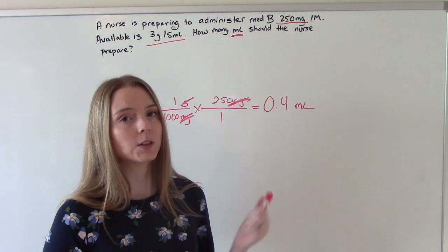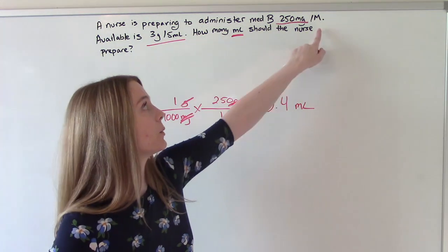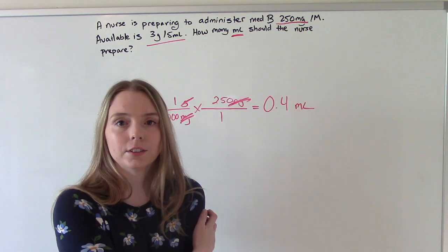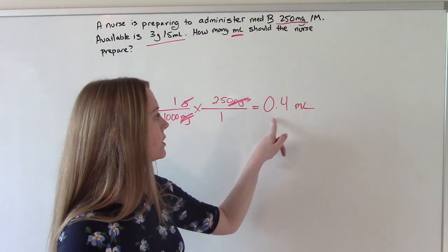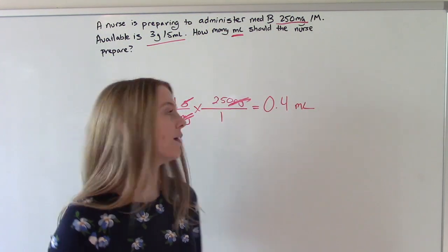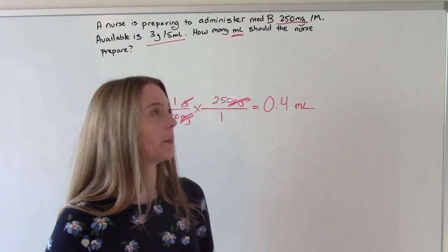Because this isn't like the last one where we're setting the pump. This is something we're giving one time into their muscle. And you're not going to give a huge number into the muscle. So 0.4 is a perfectly safe amount of mLs to give in somebody's muscle.